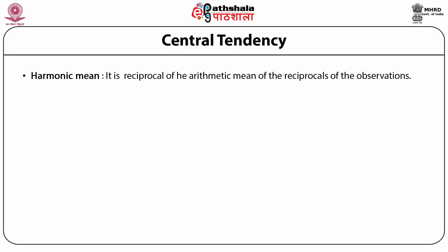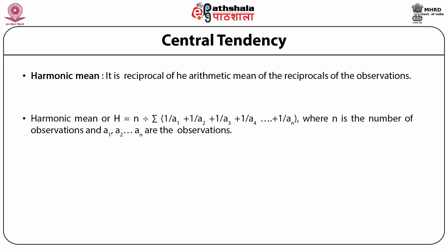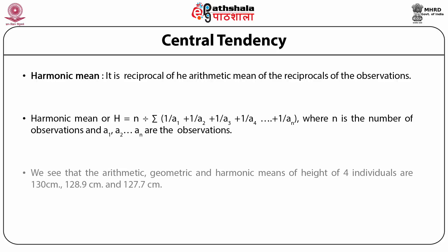The harmonic mean is the reciprocal of the arithmetic mean of the reciprocals of the observations. Harmonic mean H = n / (1/a1 + 1/a2 + 1/a3 + ... + 1/an), where n is the number of observations. In the sample of heights of four individuals mentioned above, the harmonic mean can be calculated as shown. Thus, the arithmetic mean, geometric mean, and harmonic mean of the heights of the four individuals are 130 cm, 128.9 cm, and 127.7 cm respectively. For a given set of data, the arithmetic mean is the highest, followed by geometric mean and then harmonic mean.